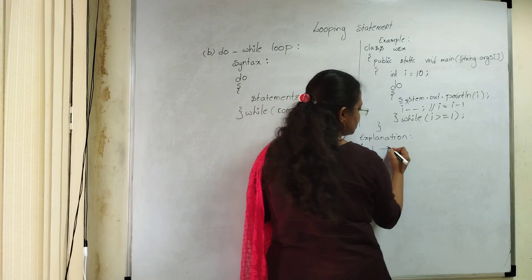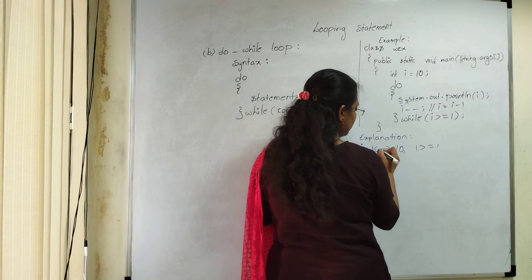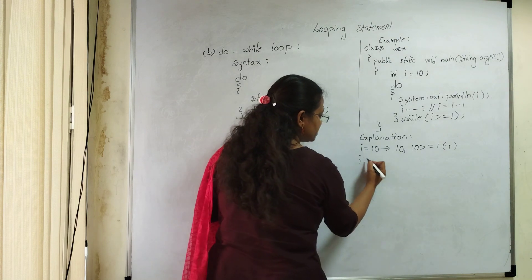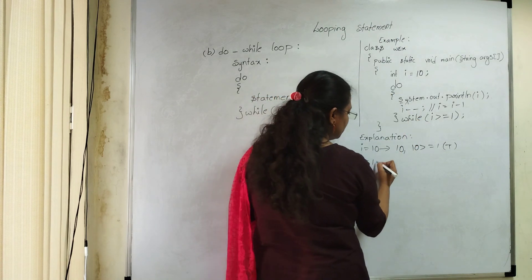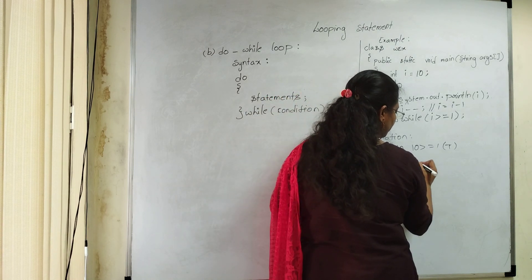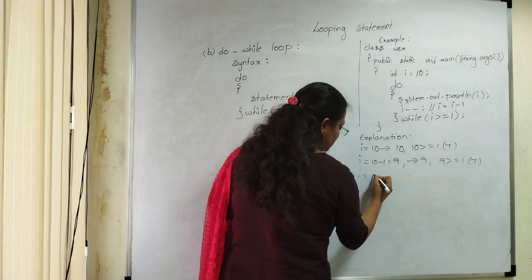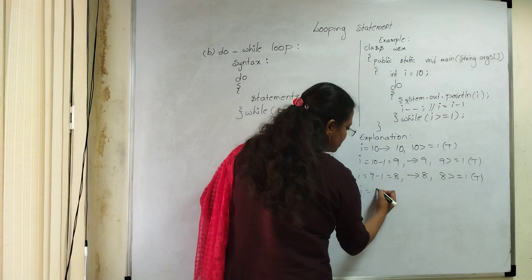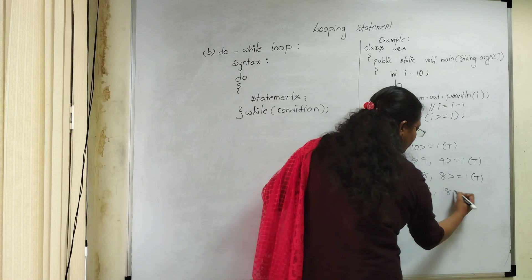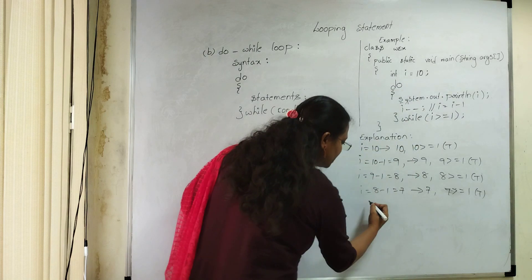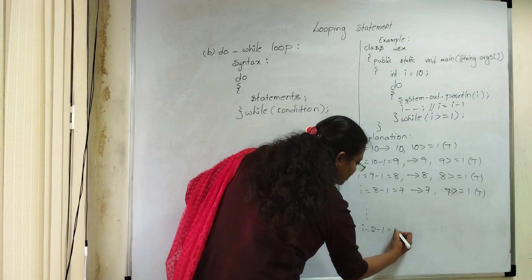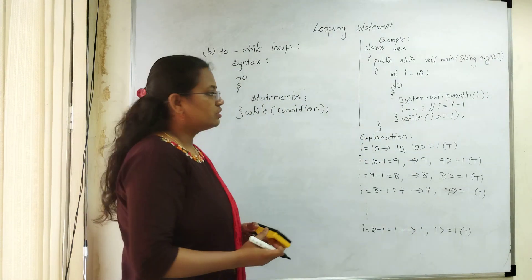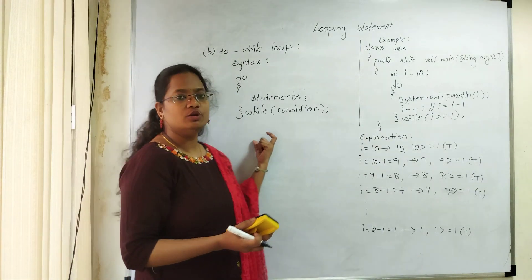Initially i = 10: prints 10, 10 >= 1 — condition satisfied. i becomes 9 (10 - 1): prints 9, 9 >= 1 satisfied. i becomes 8: prints 8, 8 >= 1 satisfied. i becomes 7: prints 7, 7 >= 1 satisfied. This continues until i = 2 - 1 = 1: prints 1, and 1 >= 1 is satisfied. That is the decrement operation. So we can perform while loop and do-while loop like this.